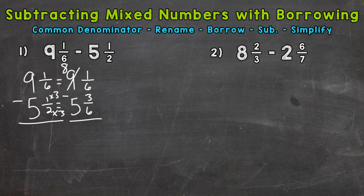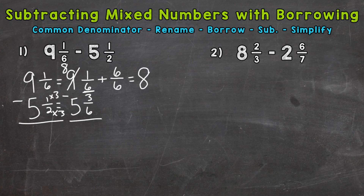Now we need to add one to that one-sixth, but we need to add one whole in fractional form. We are going to use the denominator of six, because we need common denominators when we add fractions. We're going to put six over six, because that equals one whole. I picked six over six because this denominator is six, and we need common denominators in order to add fractions.